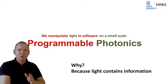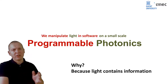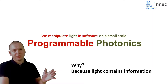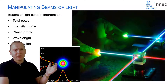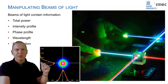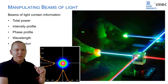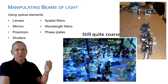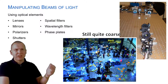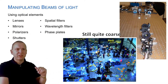Why would you want to do that in the first place? Well, light contains information, and this is always useful. We can put information in the shape of light — the intensity of beams, the profile of beams, the wavelength, etc.